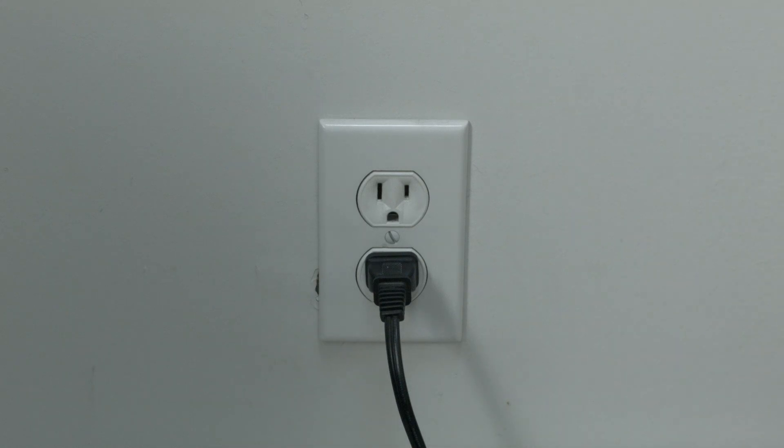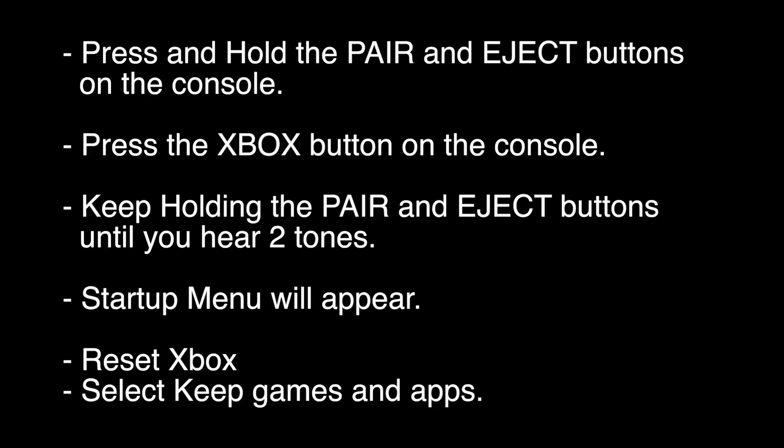Make sure the Xbox is turned off. Press and hold the pair and eject buttons. If you don't have an eject button, just hold down the pair button. While you're holding them, press the Xbox button on the console once.